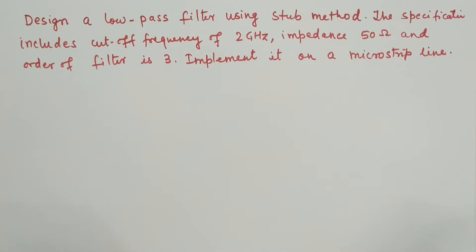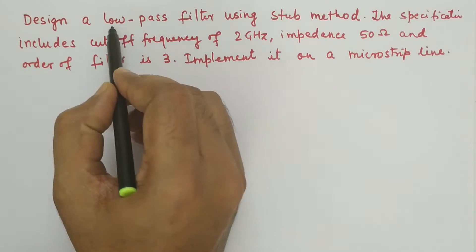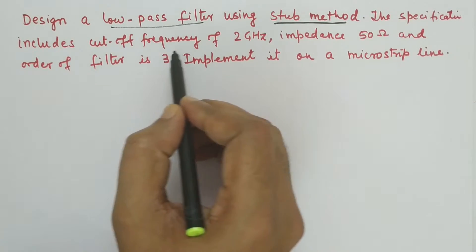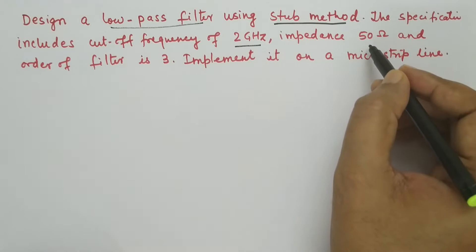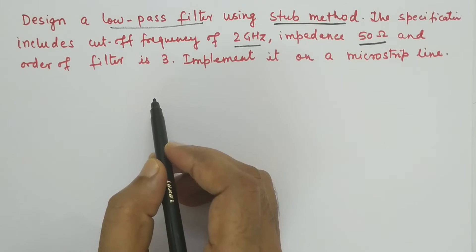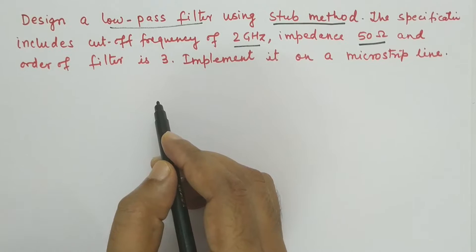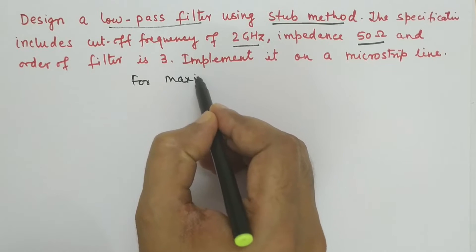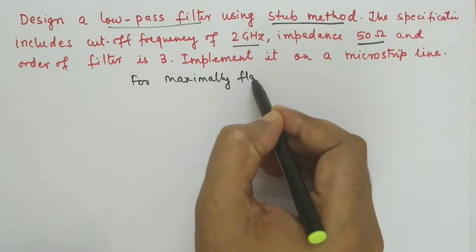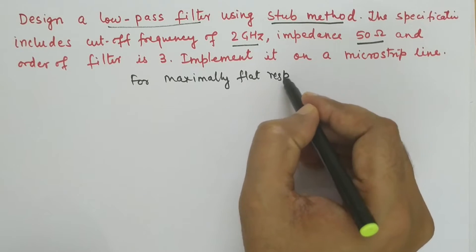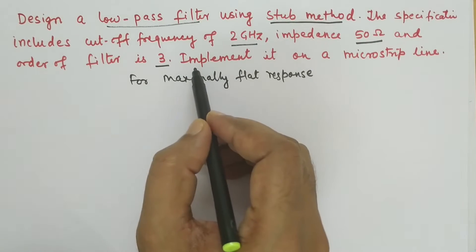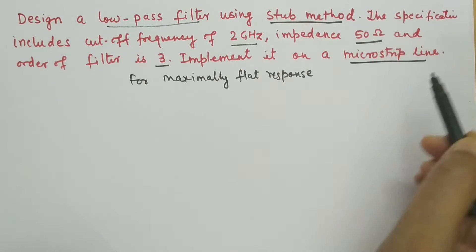Hello friends, welcome to my YouTube channel RF Design Basics. In this lecture we are going to design a low pass filter using the stub method for a cutoff frequency of 2 gigahertz, impedance 50 ohm, for maximally flat response — that means for the Butterworth filter — and the order of the filter is given as 3. Finally, we are going to implement it on a microstrip line.